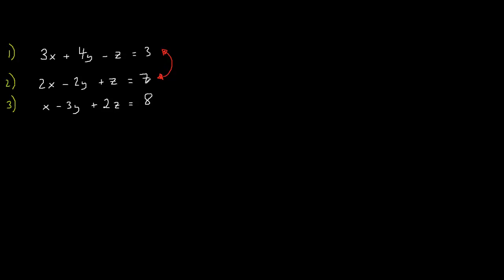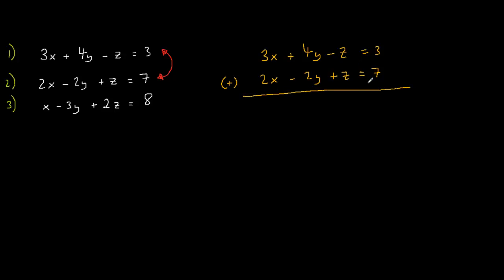To do this I'm going to add equation 2 to equation 1. So 3x plus 4y minus z equals 3, and 2x minus 2y plus z equals 7. Adding these two equations: 3x plus 2x is 5x, 4y plus minus 2y is 2y, and minus z plus z is 0, and 3 plus 7 is 10. So I'm left with 5x plus 2y equals 10.